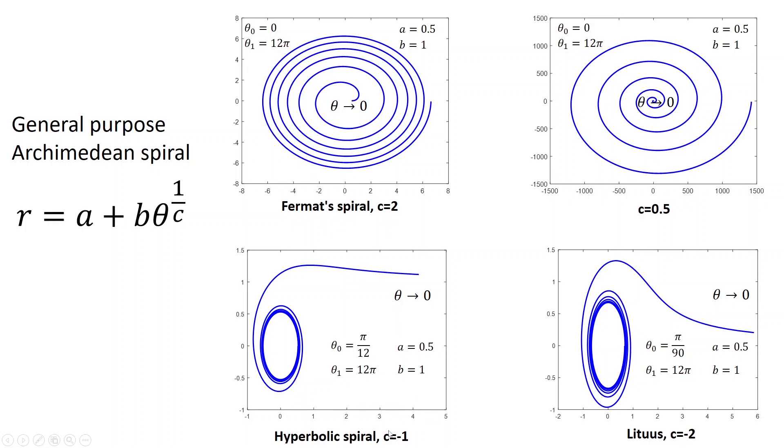If c is a negative number, then actually the spiral starts from far away from infinity and comes, and it basically spirals close to the origin point.